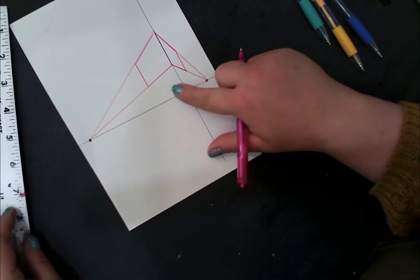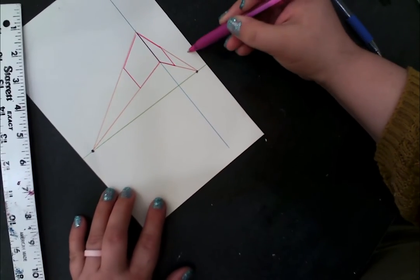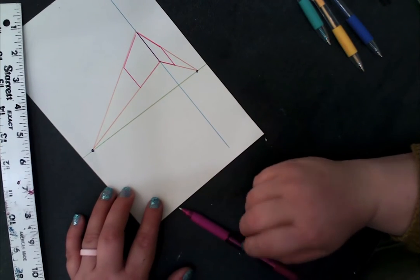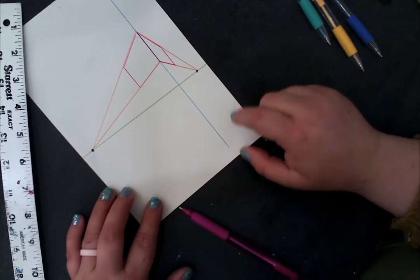And now I have to do something with the bottom. It's above my horizon line, so I can see the bottom of this rectangular prism. That means I'm going to need more guidelines.